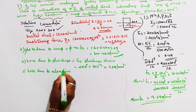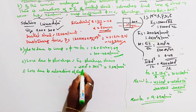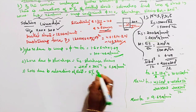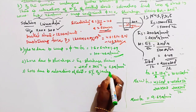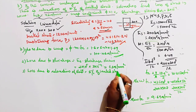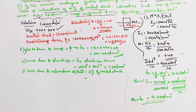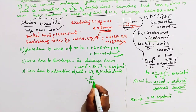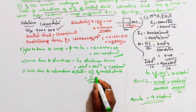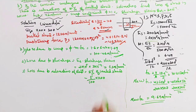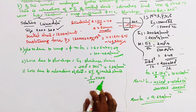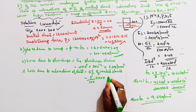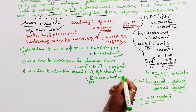Third loss: loss due to relaxation of steel = 5% of initial stress. The question states 5% of initial stress = (5/100) × 1200 = 60 Newton per mm square.